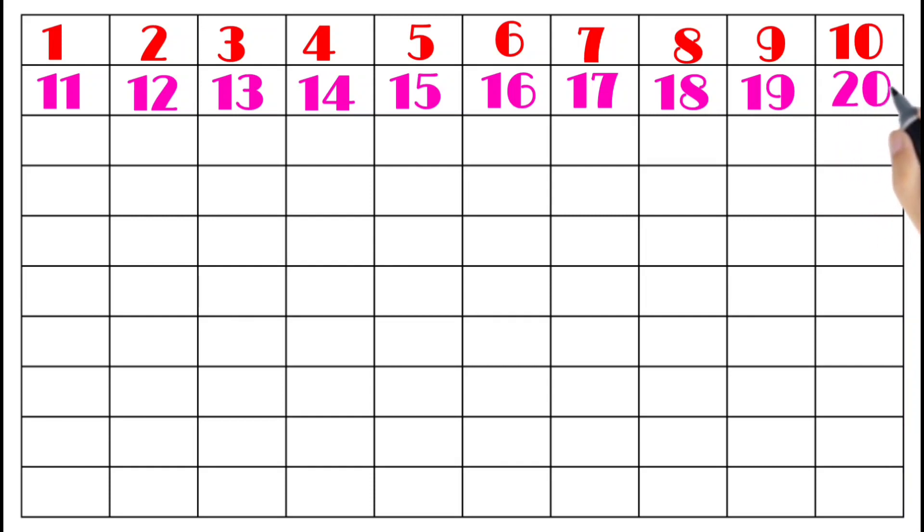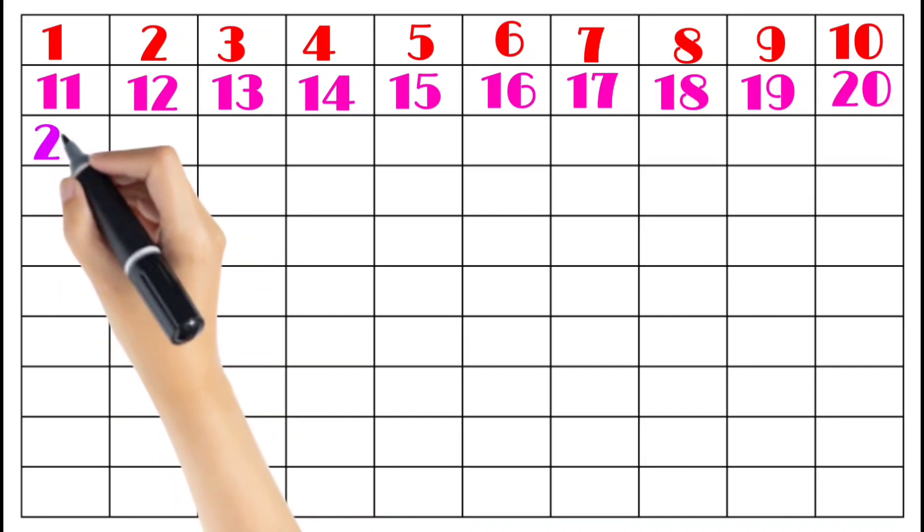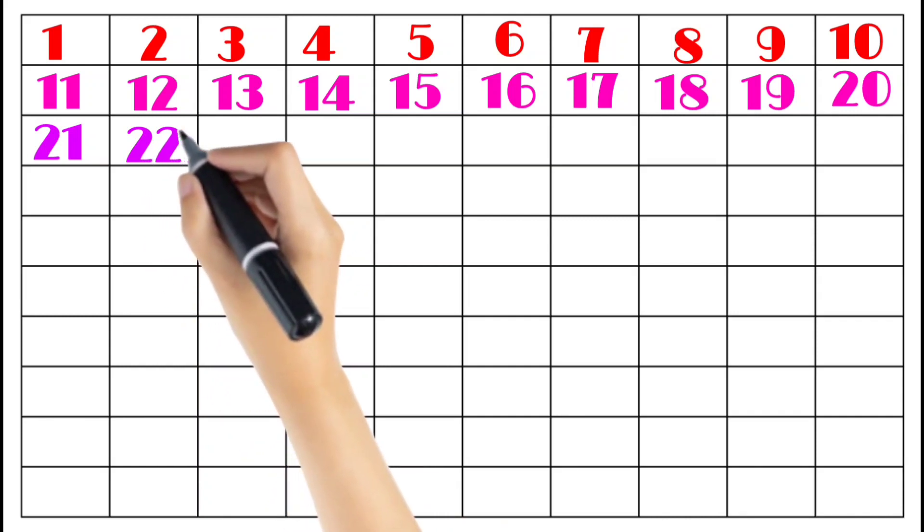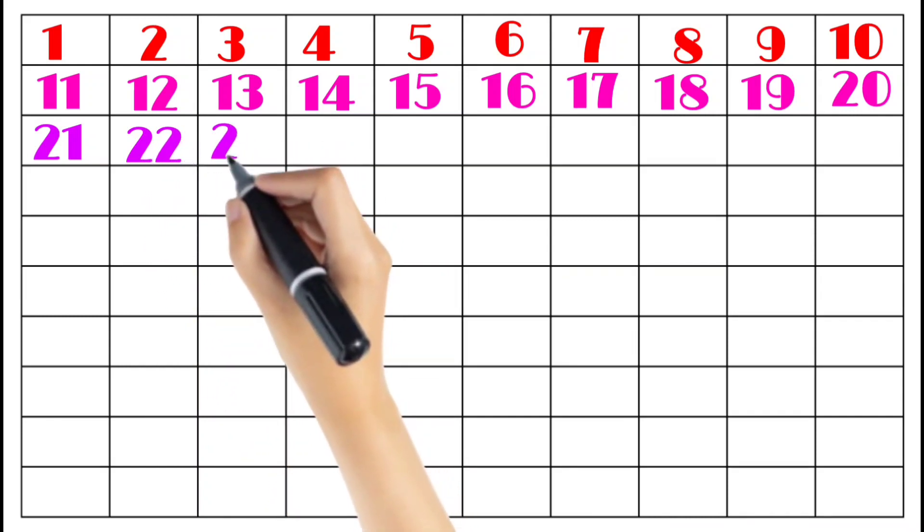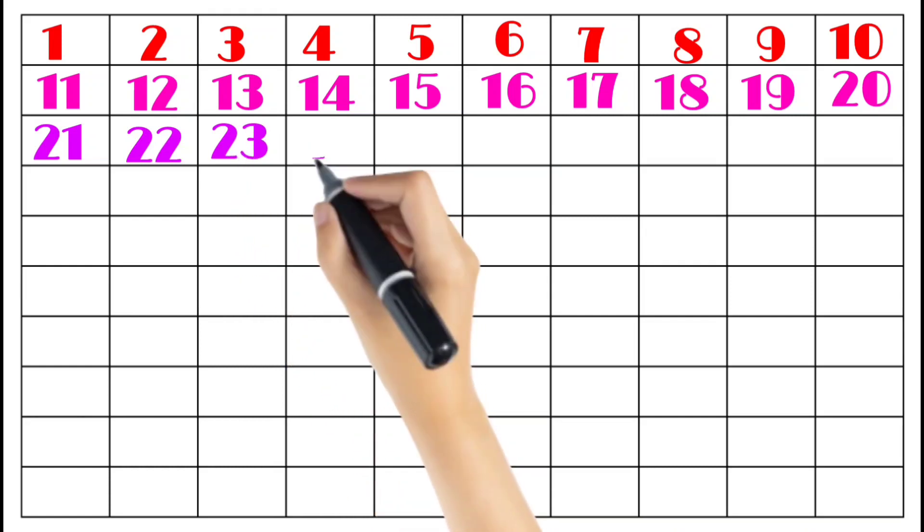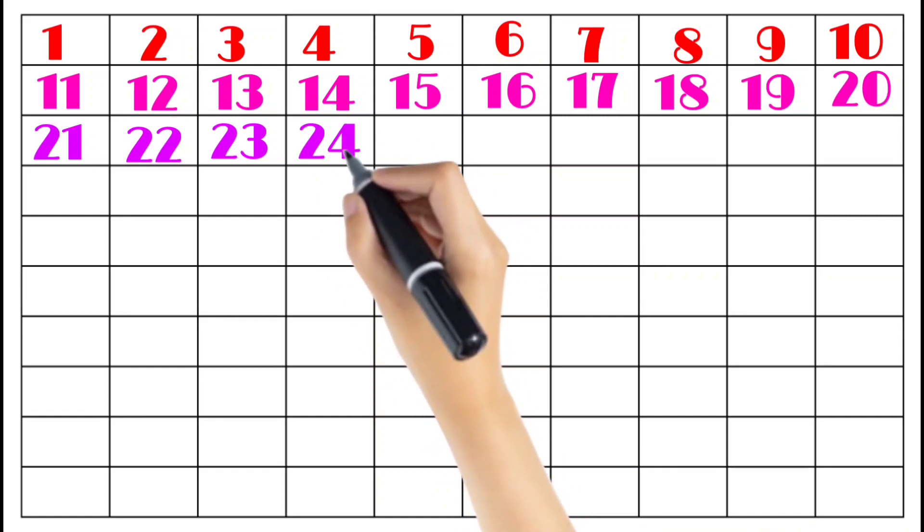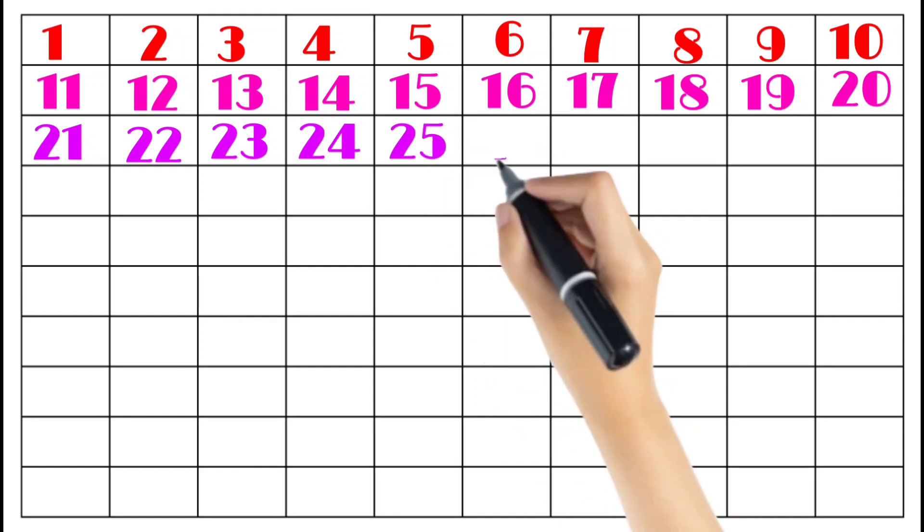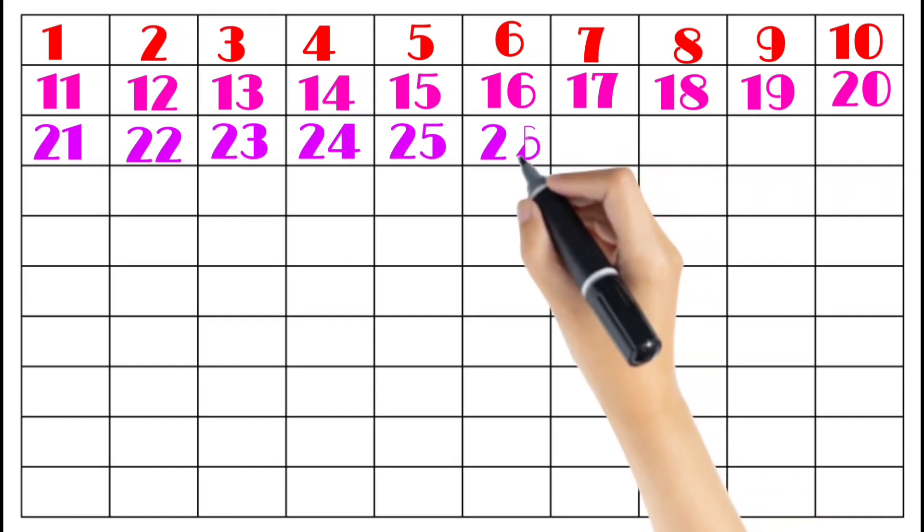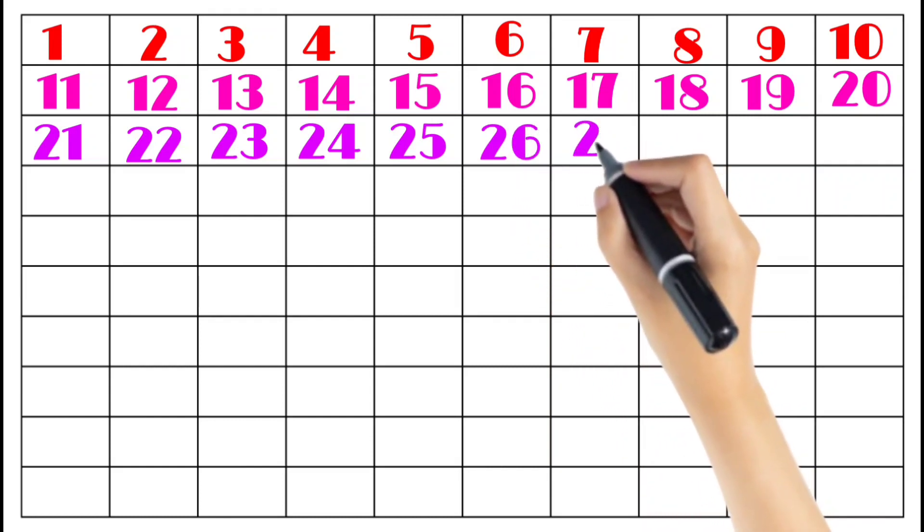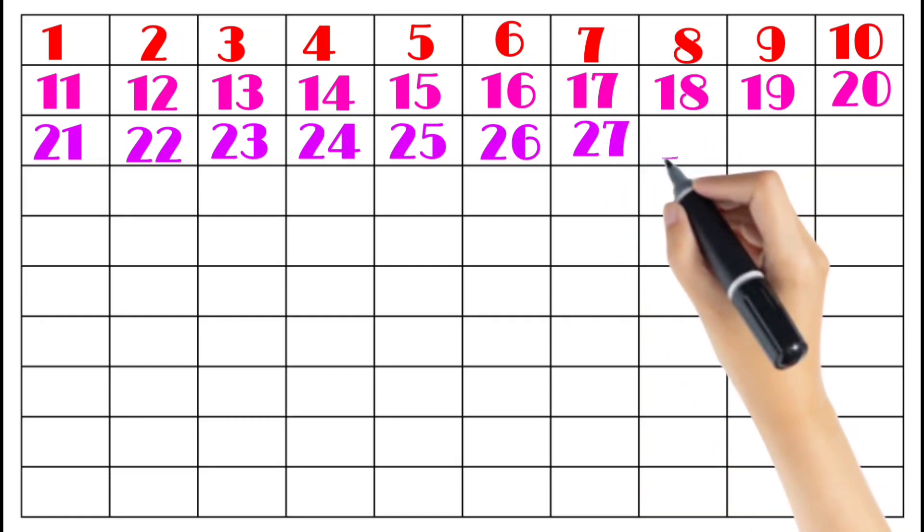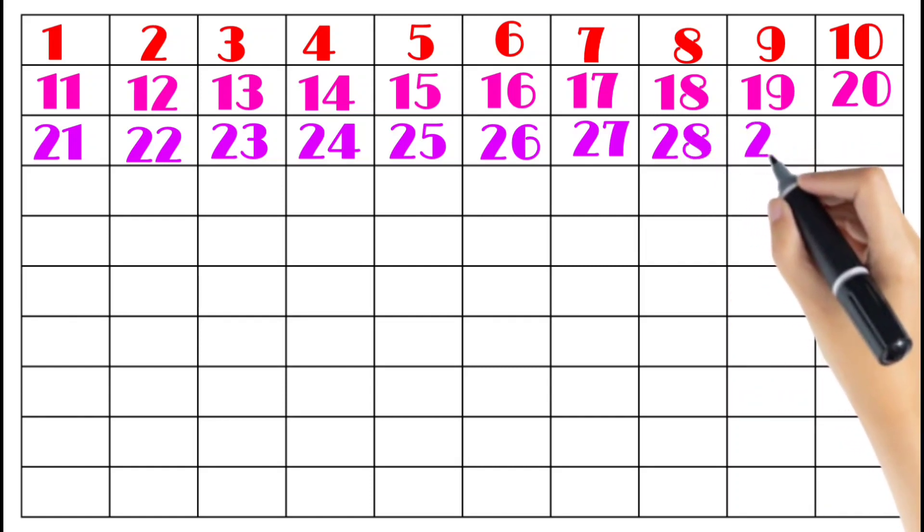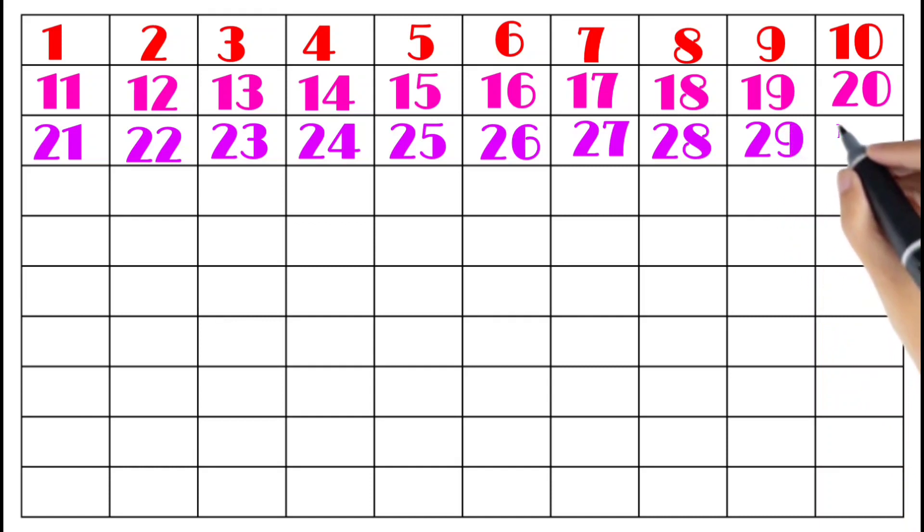Twenty-one, twenty-two, twenty-three, twenty-four, twenty-five, twenty-six, twenty-seven, twenty-eight, twenty-nine, thirty.